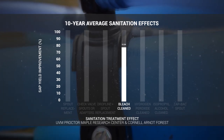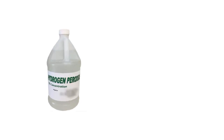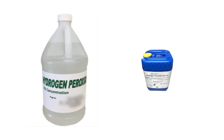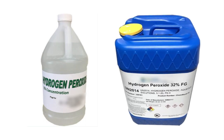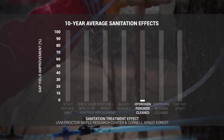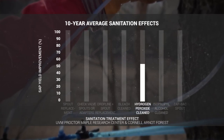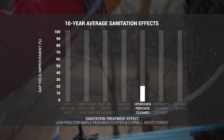Research has shown that peroxide, and peroxide with peracetic acid, is ineffective in controlling microbial populations in tubing systems, regardless of the duration of contact time. Sap yield improvements were less than 22%, and net profits were typically negative.